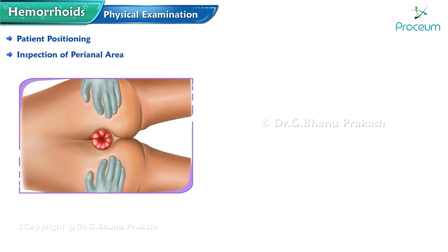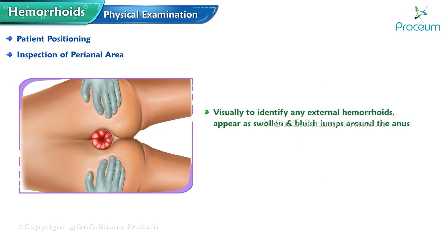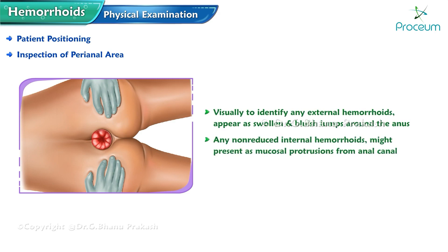The perianal area is inspected visually to identify any external hemorrhoids, which may appear as swollen and bluish lumps around the anus. Additionally, non-reduced internal hemorrhoids may present as mucosal protrusions from the anal canal.